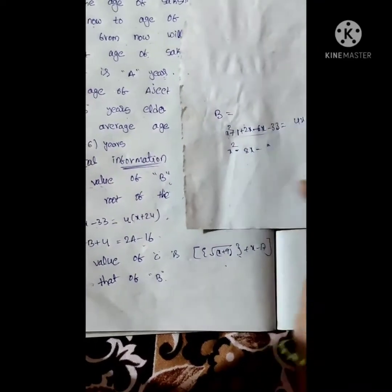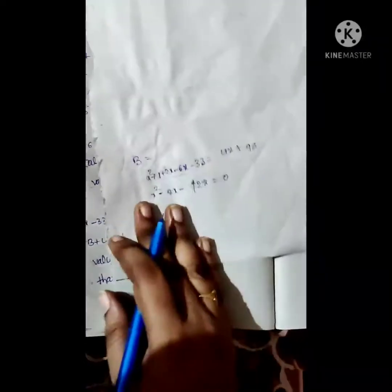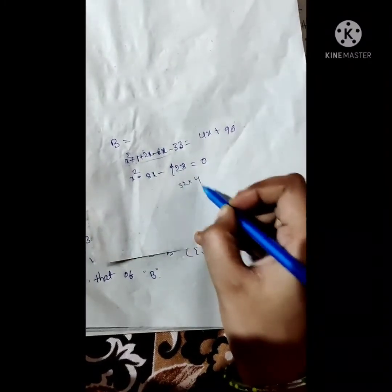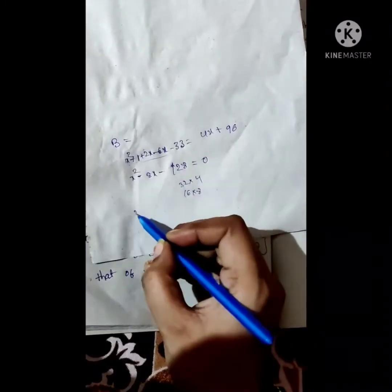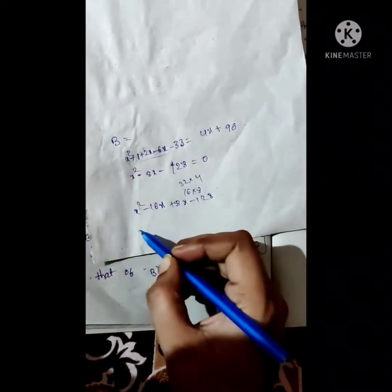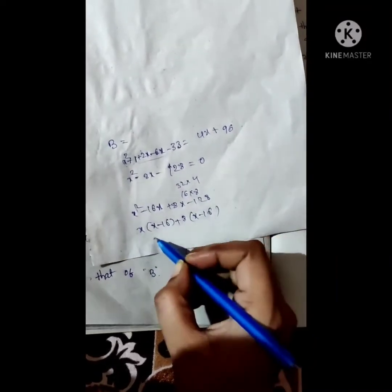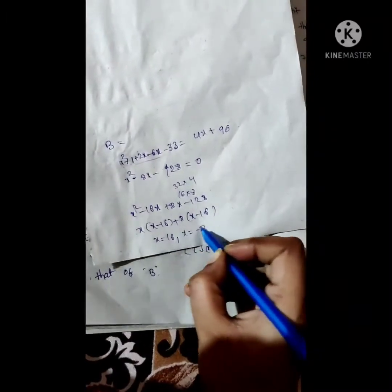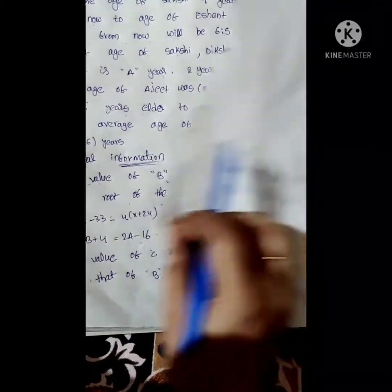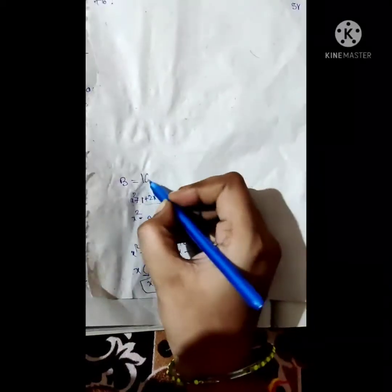Simplifying, we get x² minus 16x plus 8x minus 128 equals zero, which factors as x(x − 16) + 8(x − 16) = 0. So x = 16 or x = −7. Since B is defined as the larger root of the quadratic equation, B equals 16.